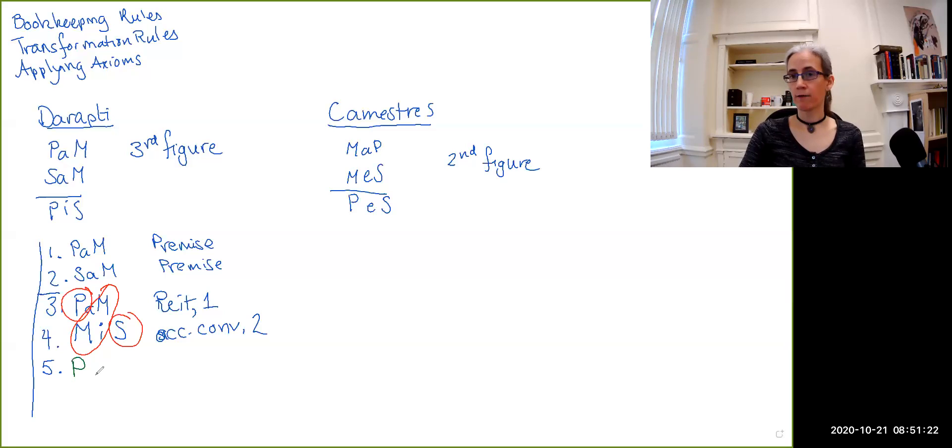You take the predicate from the major premise and the subject from the minor premise, and then Darii says that if you have an a claim and an i claim arranged in the first figure, you can derive from that an i claim. So this is a result of applying the premise Darii to lines three and four. And what do you know? PiS right here is exactly what we wanted to try to prove.